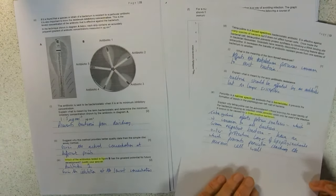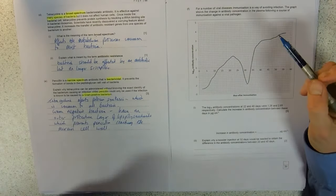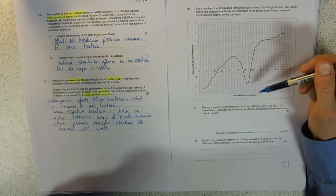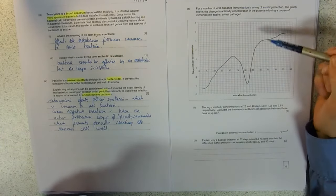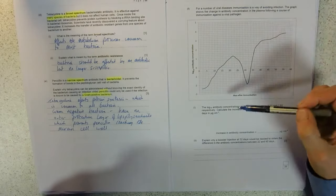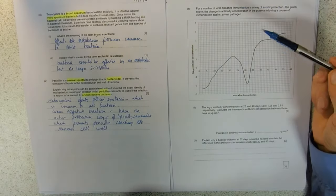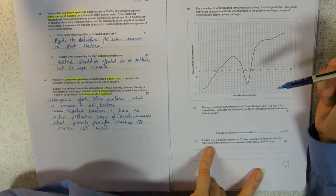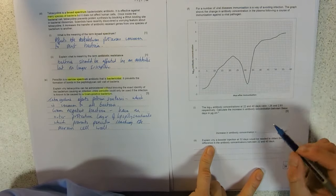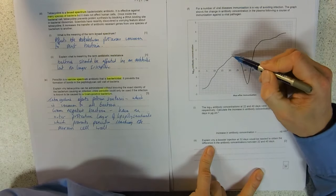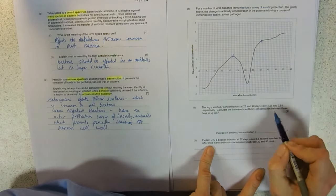The last part - we've got a little graph with logs. We use logs when if we do this graph not on log paper, the graph would be very big indeed. You've had practice doing log graphs in your maths homeworks. The log 10 antibody concentration at 22 days and 40 days with these numbers. We don't need to read this graph.